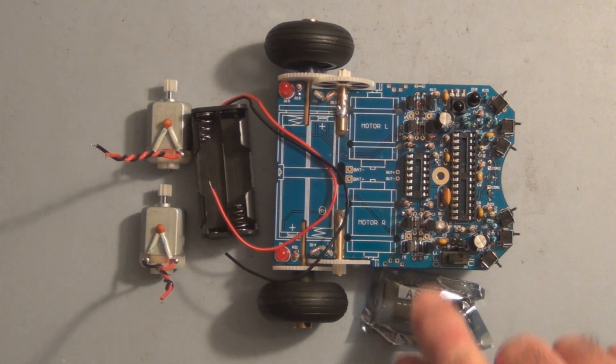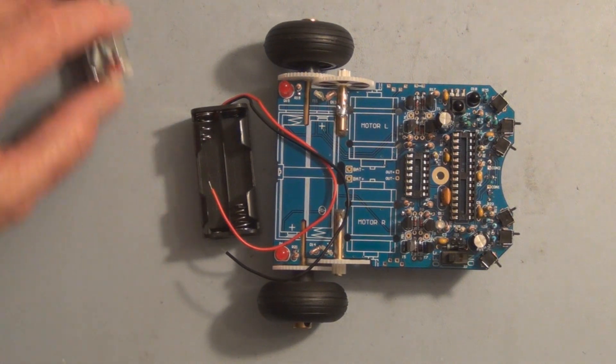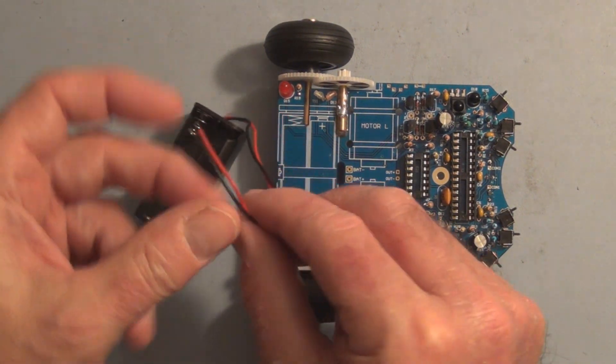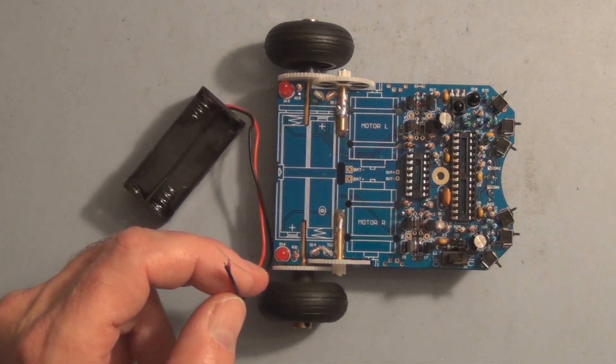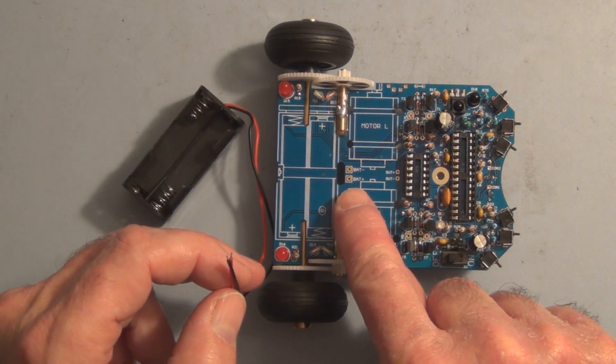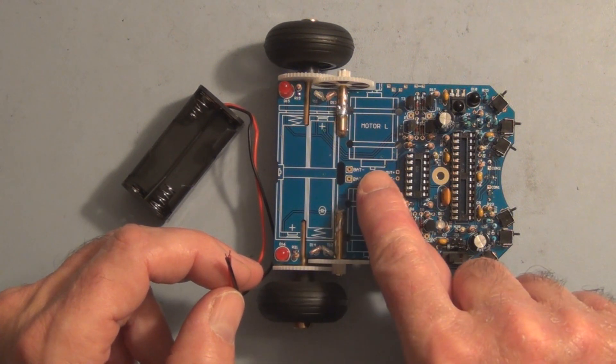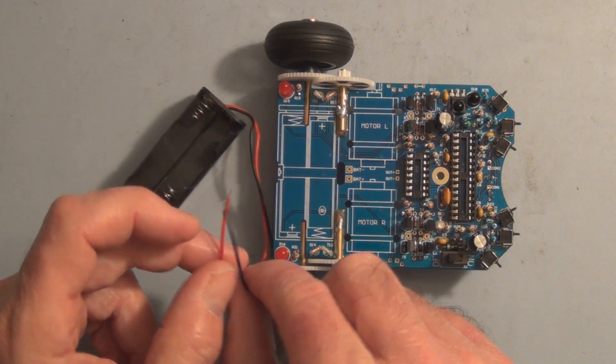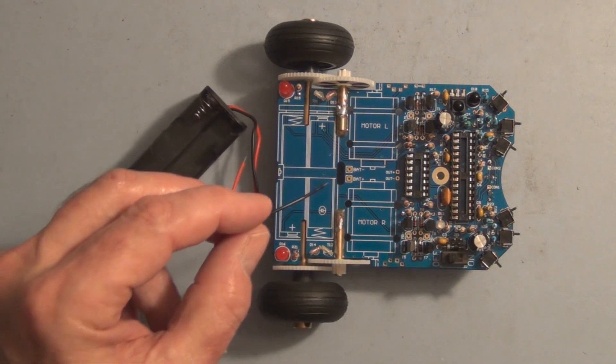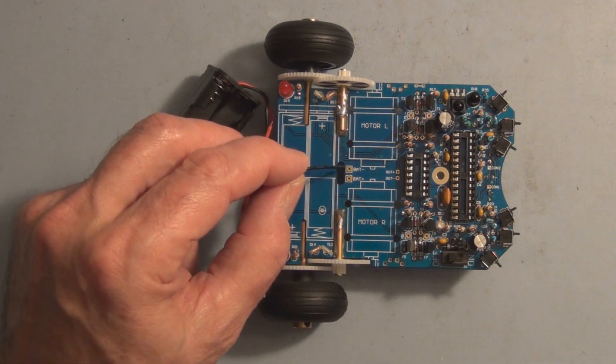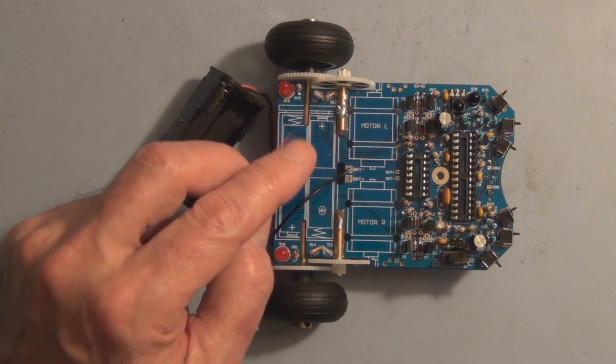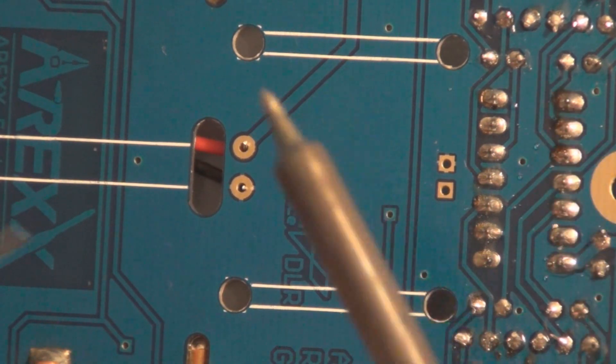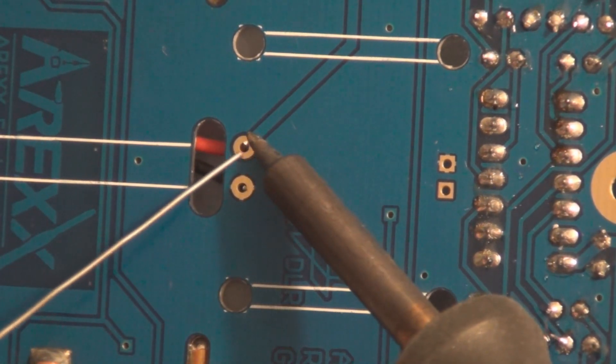So let's get to installing the two motors and the battery holder. First I'll install the battery holder. It's pretty straightforward - there's only two wires, the red and the black. Right here is where the wires go - there's a battery minus and a battery plus indicated on the PCB. So I'll solder these in place. Just tape the wires down to hold them in place until I solder them.